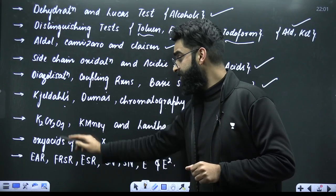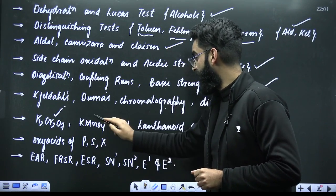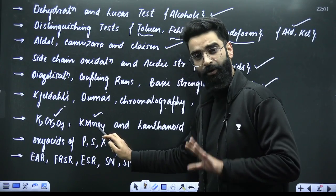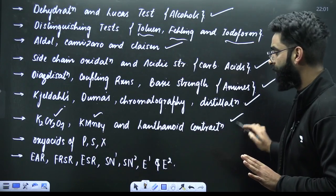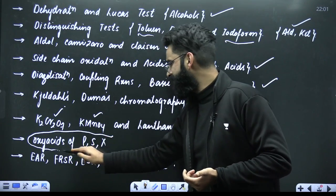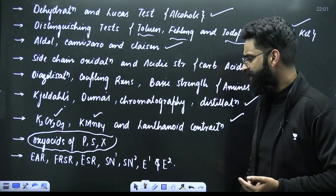Do these two particular compounds on priority. One is K2Cr2O7, its preparation, etc. KMnO4, preparation properties and lanthanoid contraction. Similarly, when it comes to your P block, do not underestimate these topics. Oxy acids of phosphorus, sulfur and halogens.